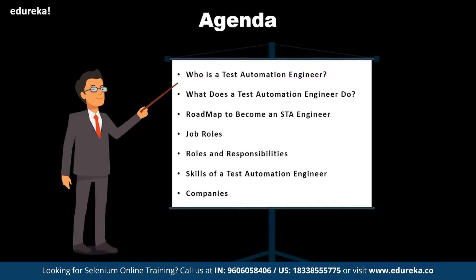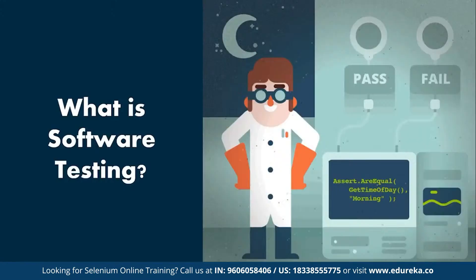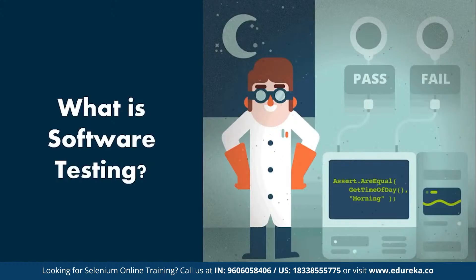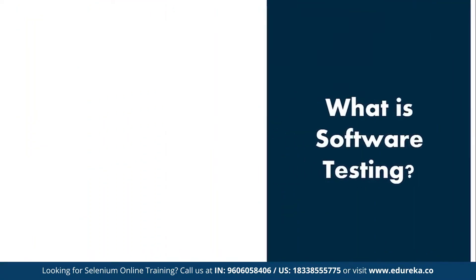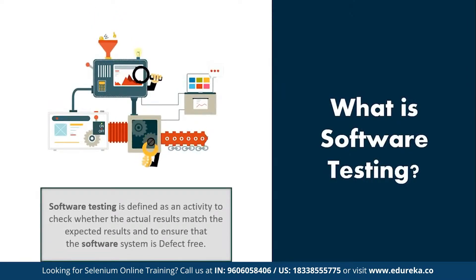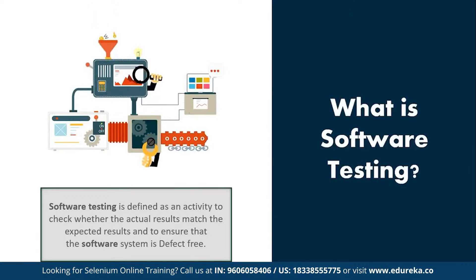Before I tell you who is a software test automation engineer, let us first know what is software testing. Software testing is basically a process of evaluating the functionality of a software application to find any software bugs. It checks whether the developed software meets the specified requirements and identifies any defects in the software in order to produce a quality product. It is also stated as the process of verifying and validating a software product to check whether it meets the business and technical requirements that guided its design and development.